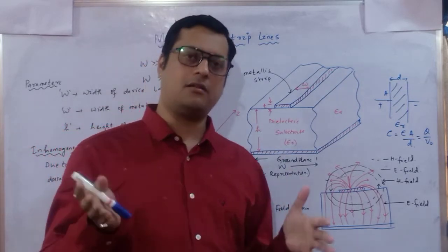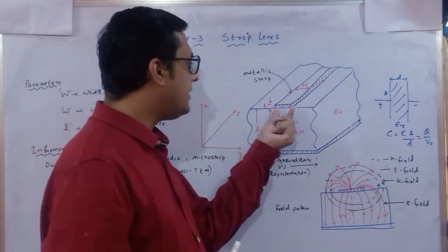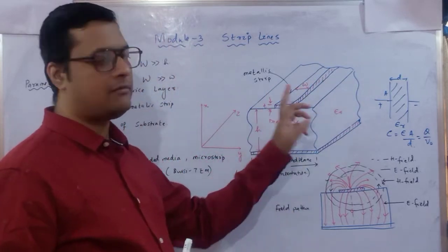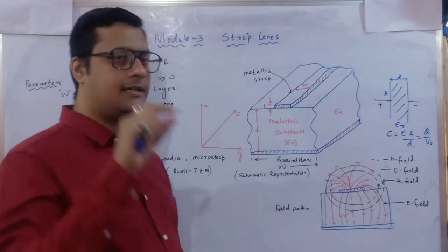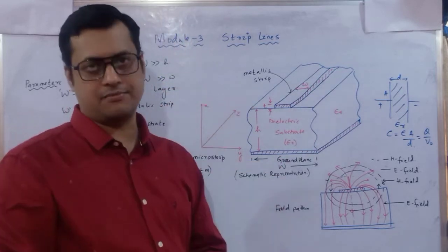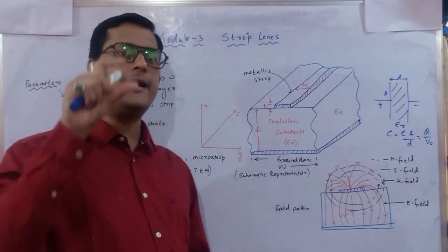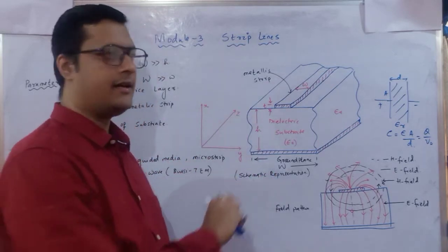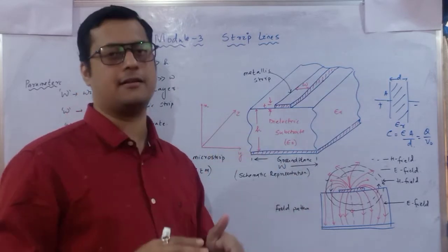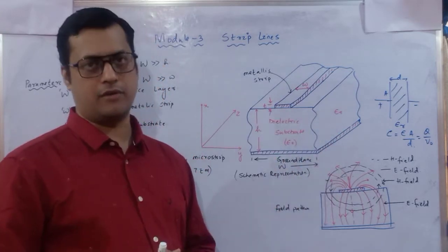The dimensions of the microstrip line play a key role. We have three dimensions: small w is the width of the metallic plate, t is its thickness, and h is the height of the dielectric substrate. The dielectric substrate has permittivity epsilon r — not air; if it were air, epsilon r would be one.